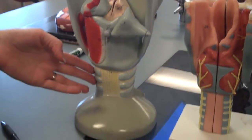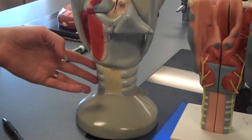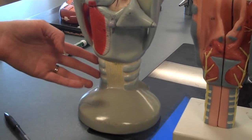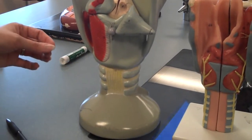The tracheal cartilages are there to make sure that the airway stays open as the lungs are inflating, so that the suction created in the lungs does not collapse the airway.